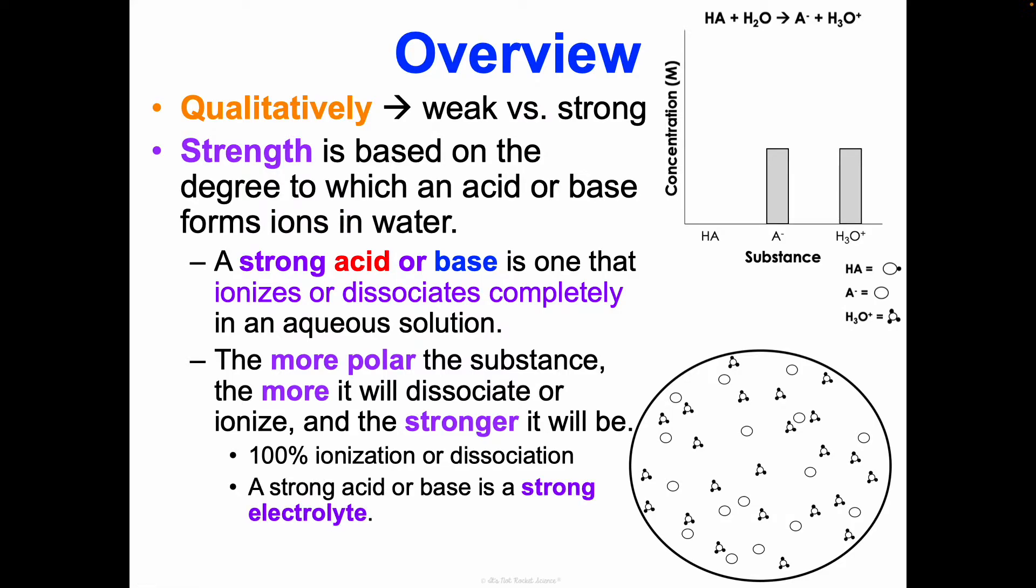Because strong acids and bases are strong electrolytes, they completely make all of these ions here. And here are a bunch of examples of those things. Now, that's what a strong one looks like. Let's talk about weak now.